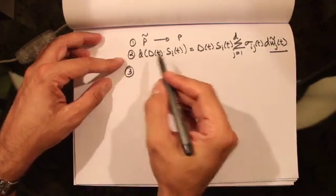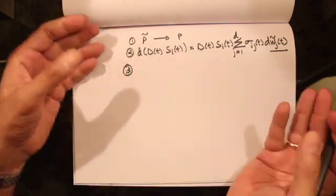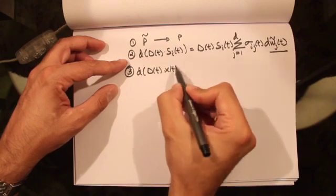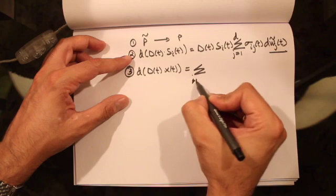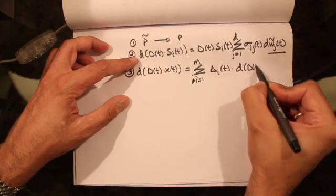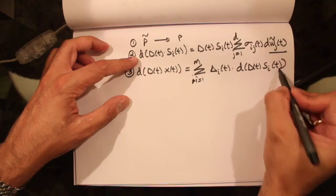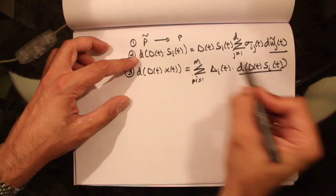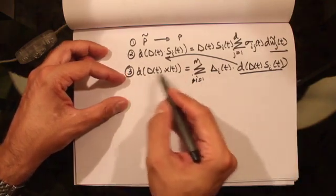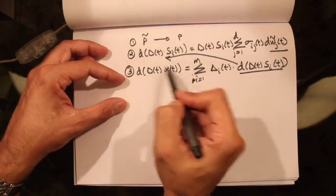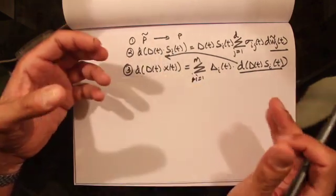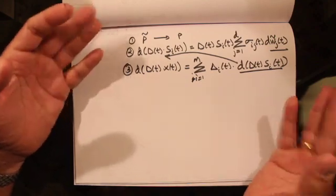Since W-tilde is a Brownian motion under P-tilde, this leads to the fact that the discounted stock process is a martingale. Furthermore, the discounted value of the portfolio process is also a martingale, and the differential equation for that is d of D(T) X(T) equals summation i equals 1 to M of delta_i(T) times d of D(T) S_i(T). Since the discounted portfolio process satisfies this relation, it is also a martingale under P-tilde, and that guarantees there is no arbitrage in the model.